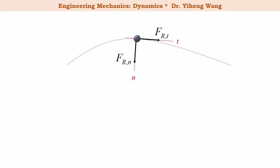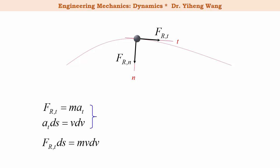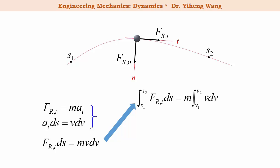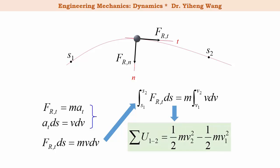According to Newton's second law, the resultant force along the tangential direction equals m, the mass of the particle, times a_t, which is the acceleration along the tangential direction. We also know the kinematic equation a_t ds = v dv. Combining these two equations and integrating from position one to position two, we get an equation whose left-hand side is simply the total work done to this particle during this process. This is known as the principle of work and energy.